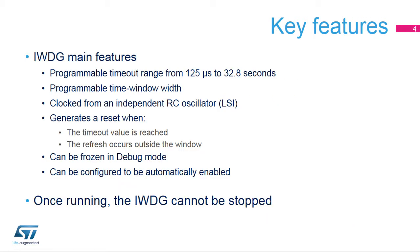The Independent Watchdog offers a wide range of timeout values, from 125 microseconds to 32 seconds. It is clocked by a 32 kHz RC oscillator, which cannot be disabled when the Independent Watchdog is enabled. It generates a reset when the programmed timeout value elapses, or when a Watchdog refresh occurs outside a programmed time window.